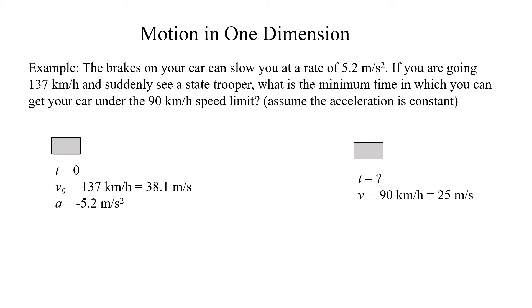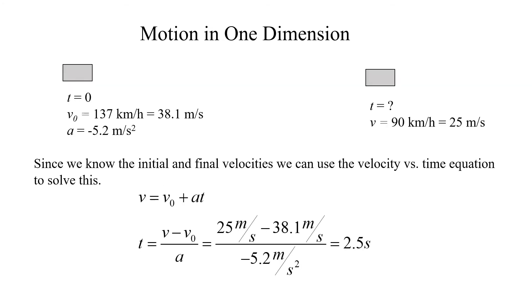So now we can apply the kinematic equations. Which kinematic equation am I going to use? Well, I know my initial velocity and my final velocity, and I want to find the time it takes. So I'm going to use velocity as a function of time. So v equals v naught plus at. And I want to know the time. I know my initial and final velocities, and I know the acceleration. So I solve for t, and I get v minus v naught over a. My final velocity is 25 meters per second. My initial velocity is 38.1 meters per second. So I have 25 minus 38.1 divided by the acceleration, which is negative 5.2 meters per second squared. And then that reduces to 2.5 seconds.